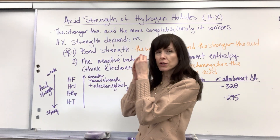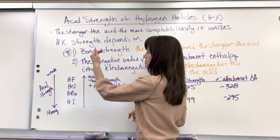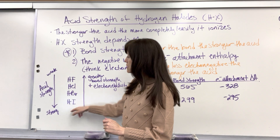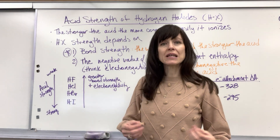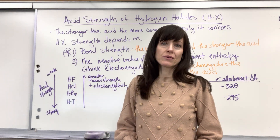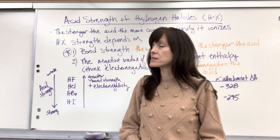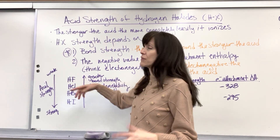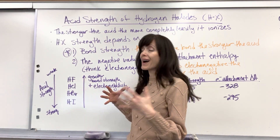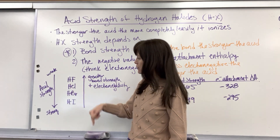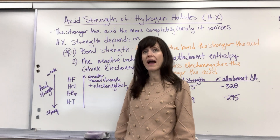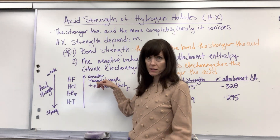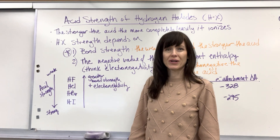So there's your takeaway. Think about the periodic table — as you go down, you're going to increase acid strength because these acids more easily, more readily break apart and ionize, which makes them a stronger acid. Hydrofluoric acid is technically considered a weak acid; it doesn't even 100% dissociate. These three — hydrochloric, hydrobromic, and hydroiodic — are all strong acids because they 100% ionize. And it all depends primarily on bond strength, and then that negative electron attachment enthalpy.